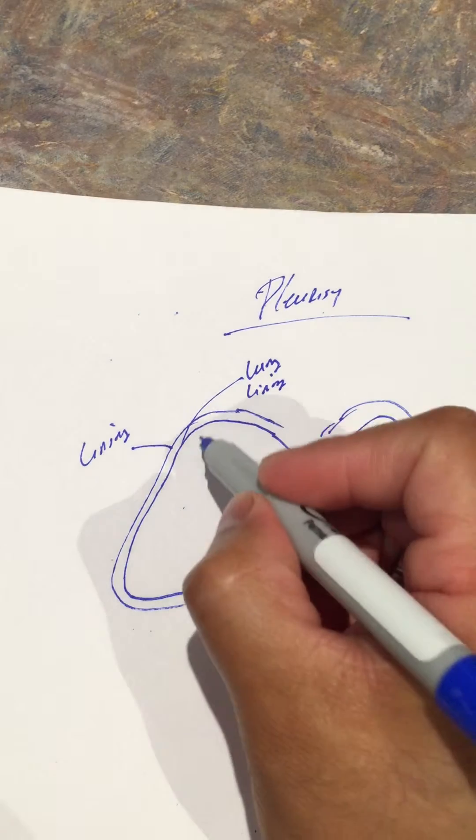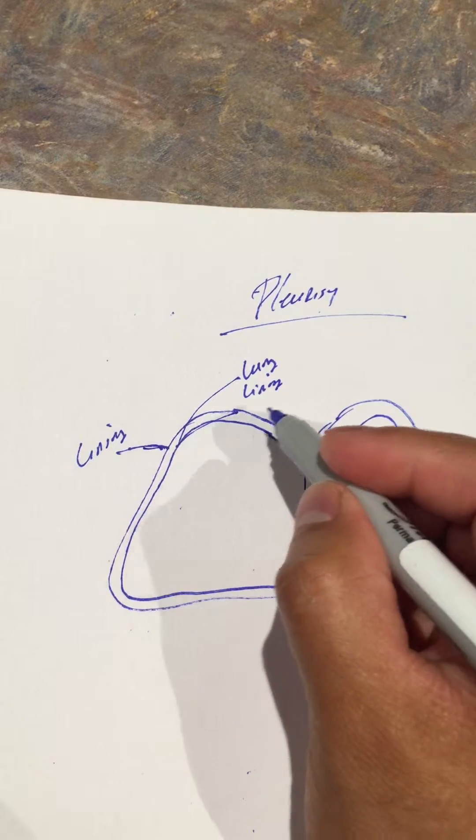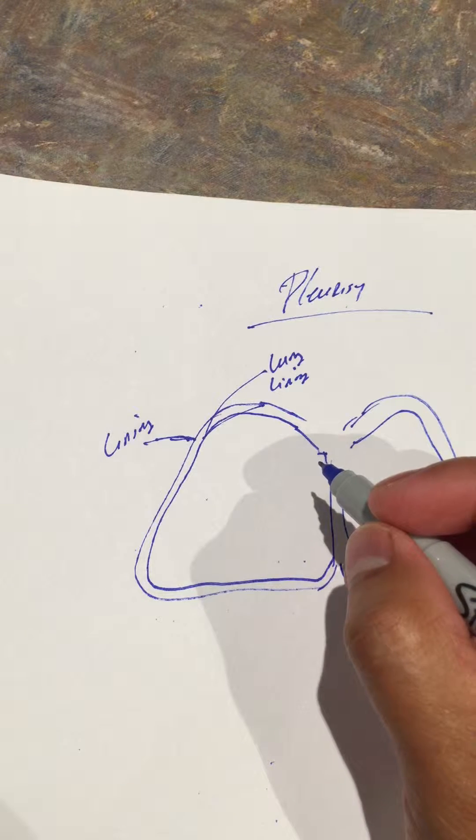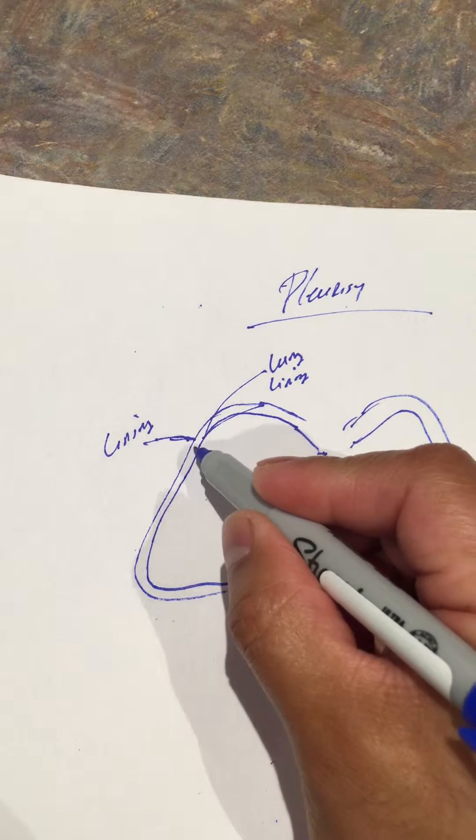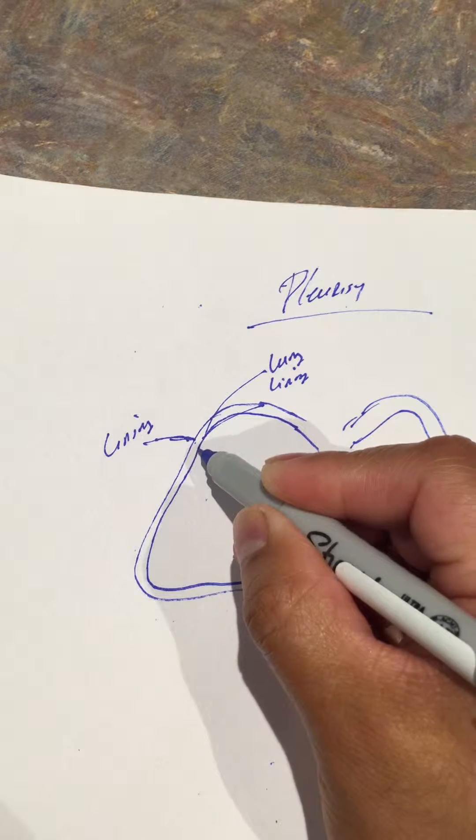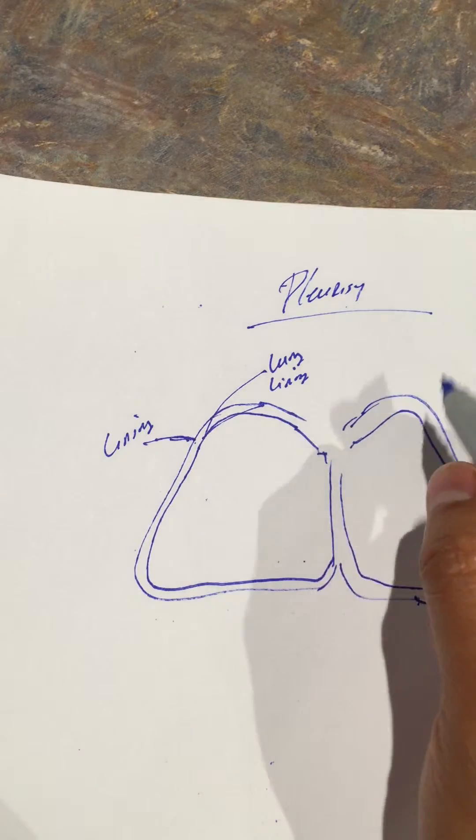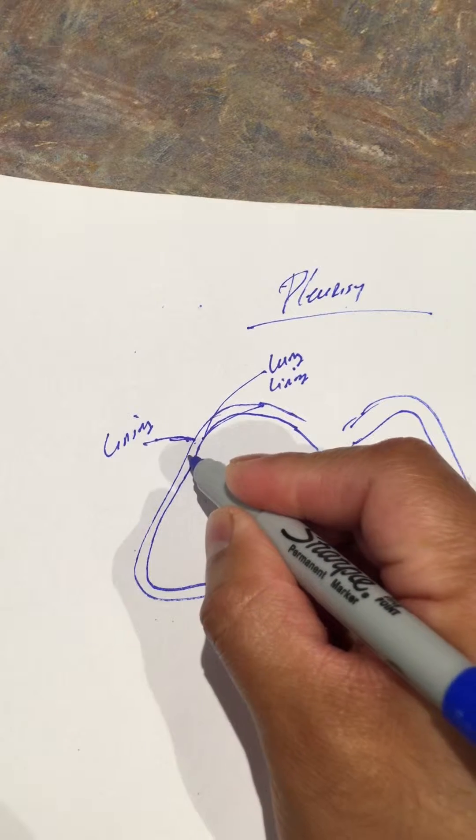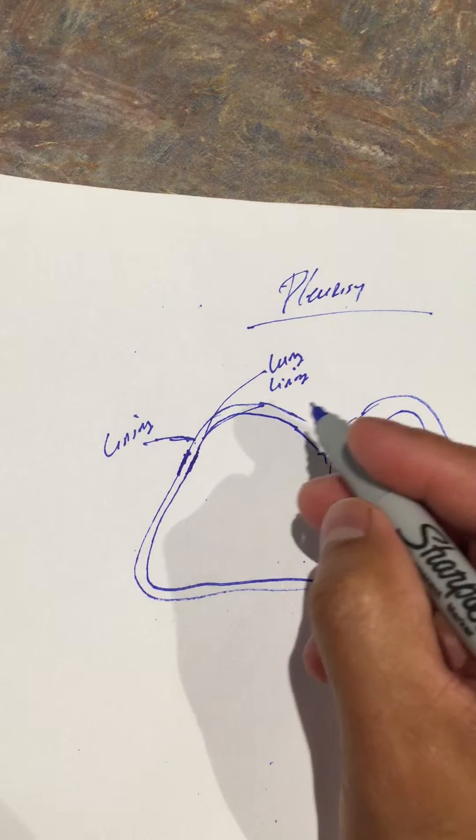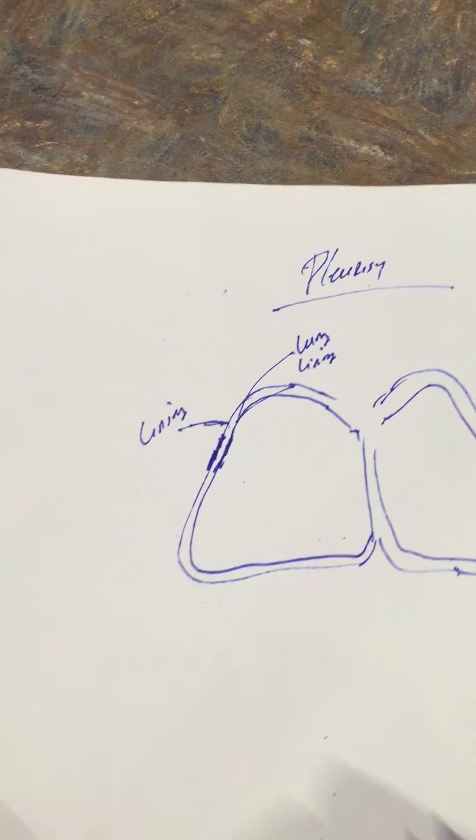Now again, the lung also has some lining. So in pleurisy, there's an inflammation of either the lining on the lung or again in the chest wall. Now this is very important because anytime you breathe in, anytime you exhale, there's going to be movement of the lung. And this lining, if it becomes inflamed, if it becomes swollen, hence the name pleuritis or pleurisy, that lining is going to rub up against this side. So anytime there is movement, it's going to cause severe or sharp pain, chest pain.